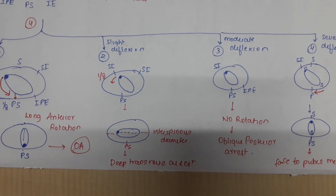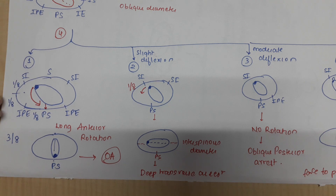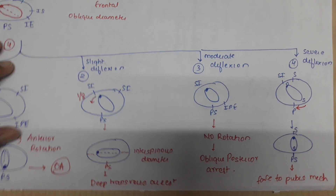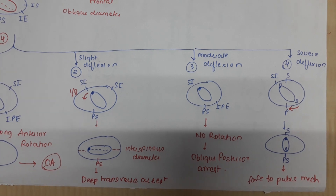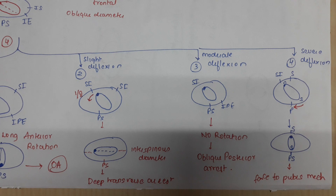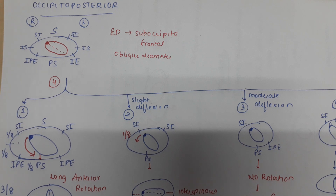These are the four possibilities that can occur with occipitoposterior position. Long anterior rotation occurs in favorable conditions — favorable uterine contractions and a favorable pelvis — in 90% of cases. The other outcomes are rare and do not progress to delivery except the face-to-pubis mechanism, but that carries a very high chance of trauma to the maternal genitalia. We will focus on other positions in later videos. Thank you for watching.